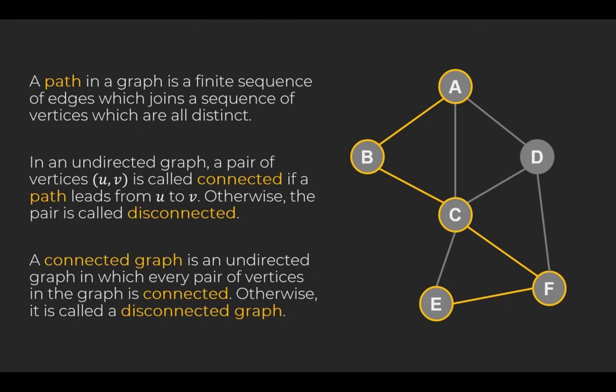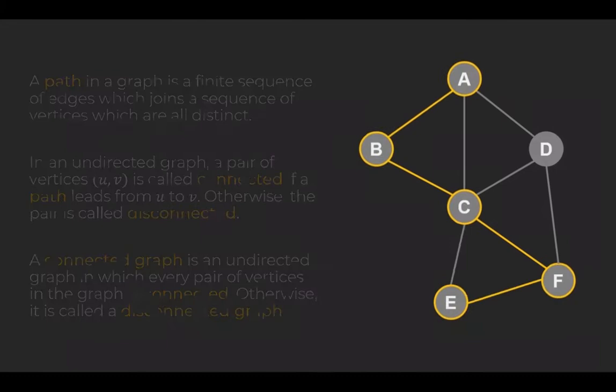A connected graph is an undirected graph in which every pair of vertices in the graph is connected. Otherwise, it is called a disconnected graph. The graph shown on the right-hand side is a connected graph.